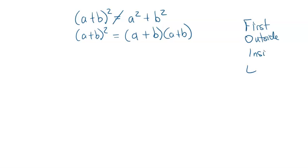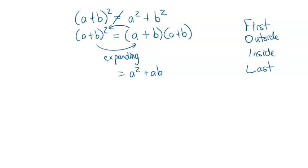First, Outside, Inside, Last. So if we FOIL this out — this is called expanding, when we go this direction. If we expand this, then what we get, multiplying First, Outside, Inside, Last: a times a is a squared; a times b is ab — those are the outside terms. The inside terms: b times a is ab again, because the order of multiplication doesn't matter. And then the last terms, b times b is b squared. When you combine these two like terms in the middle, we get 2ab in the middle, plus b squared.